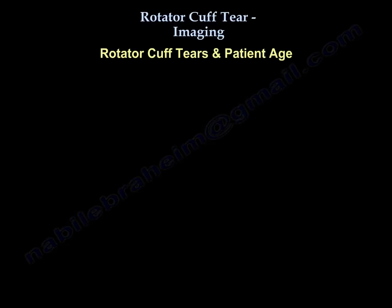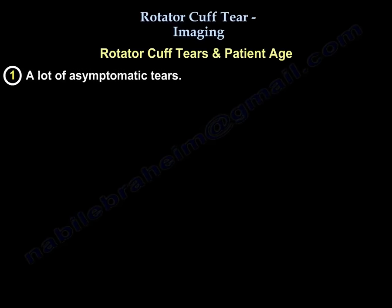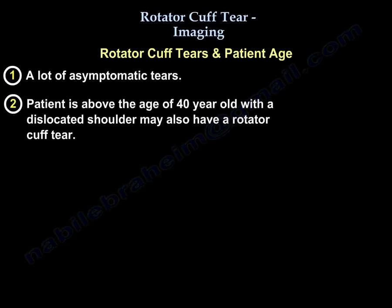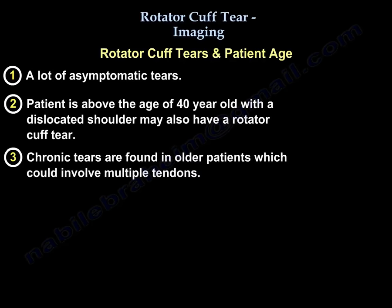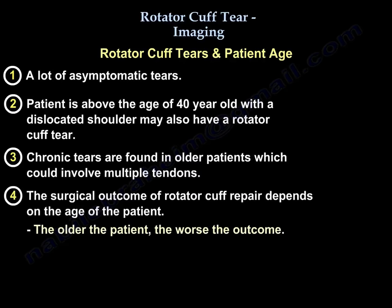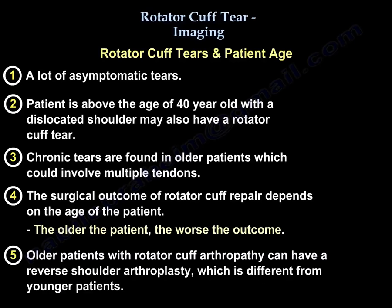Age is important with cuff tears for several reasons. Number one, there are a lot of asymptomatic tears. Number two, if you are above the age of 40 and you dislocate the shoulder, you may have a cuff tear. Number three, in older patients you will find chronic tears that could involve multiple tendons. Number four, the outcome of rotator cuff repair depends on age — the older the patient, the worse the outcome. Number five, older patients with cuff tear arthropathy can have a reverse shoulder arthroplasty, which differs from younger patients.